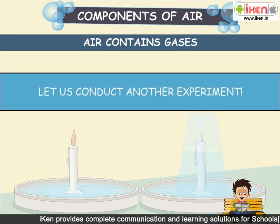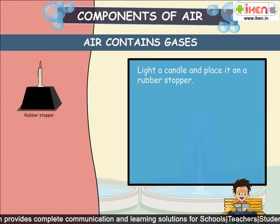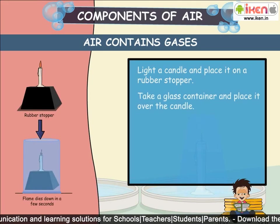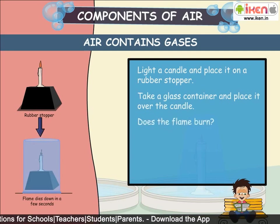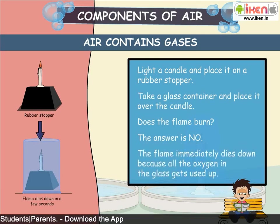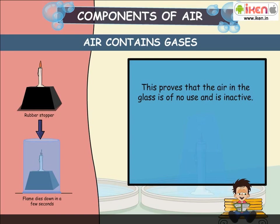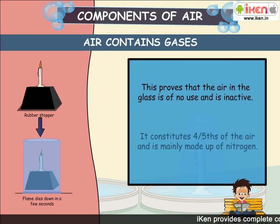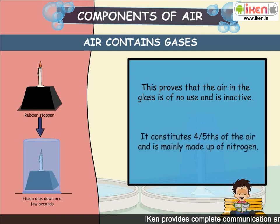Let's conduct another experiment. Light a candle and place it on a rubber stopper. Take a glass container and place it over the candle. Does the flame burn? The answer is no. The flame immediately dies down because all the oxygen in the glass gets used up. This proves that the remaining air in the glass is of no use and is inactive. It constitutes four-fifths of the air and is mainly made up of nitrogen.